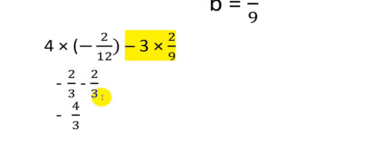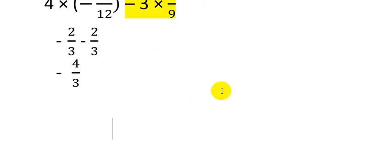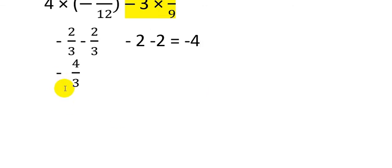We now have minus 2 over 3 and minus 2 over 3 — both fractions carry the same denominator, so we don't need to calculate LCM. The denominator remains 3. The numerator values are minus 2 and minus 2, so minus 2 minus 2 equals minus 4. Therefore the answer is minus 4 over 3.